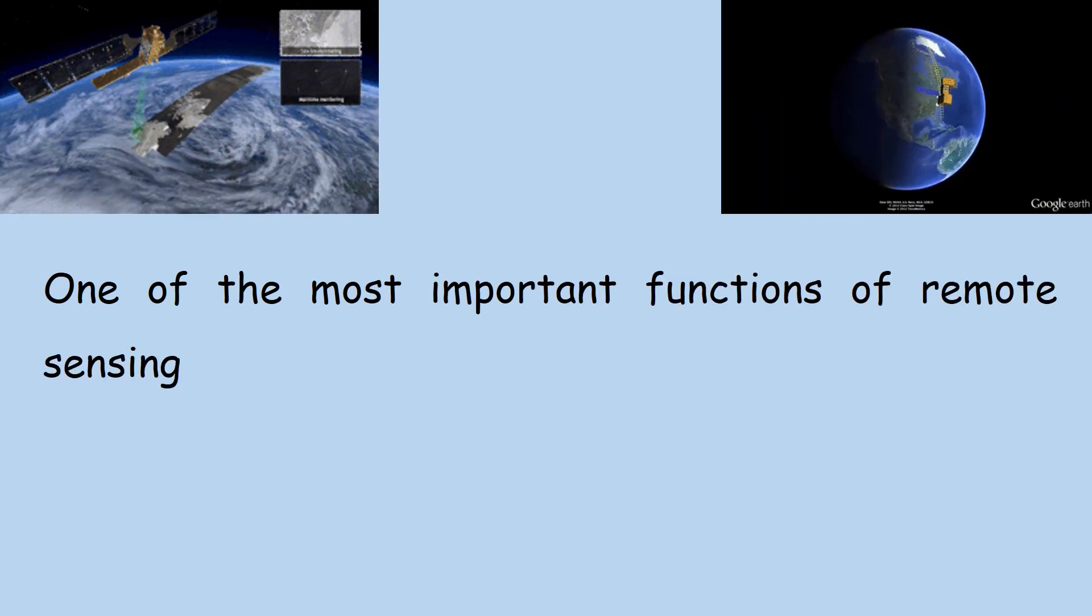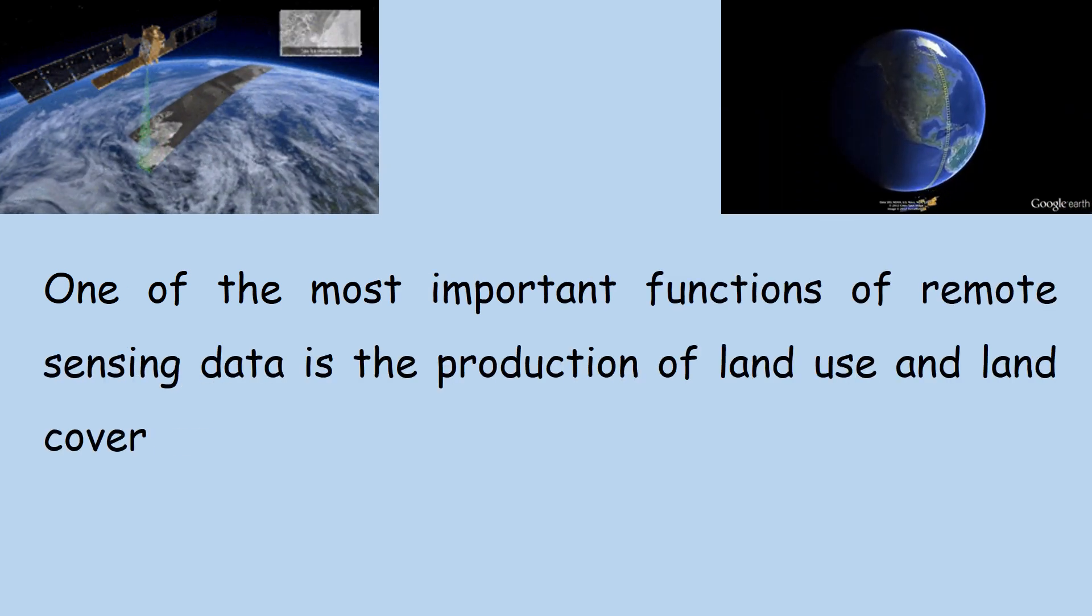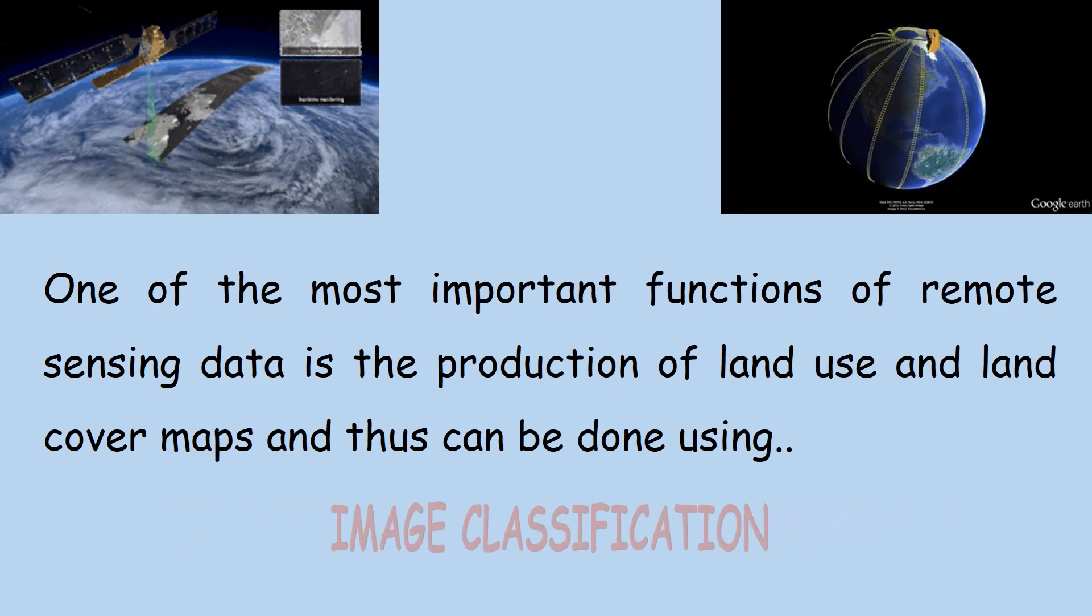One of the most important functions of remote sensing data is the production of land use and land cover maps, and this can be managed through a process called image classification.